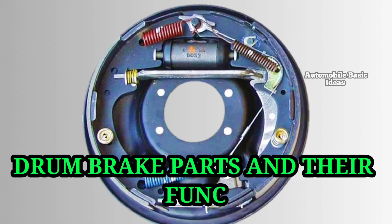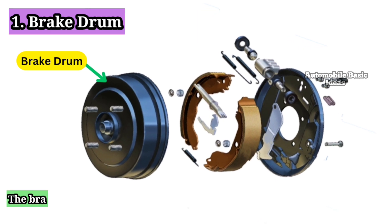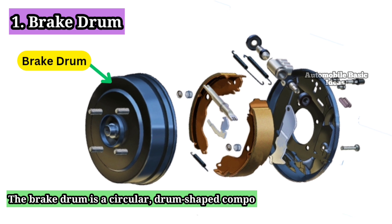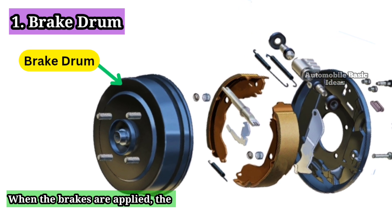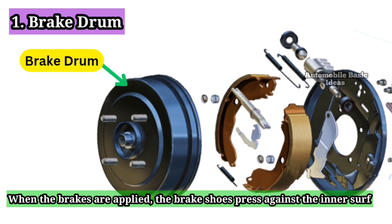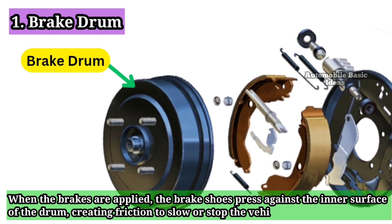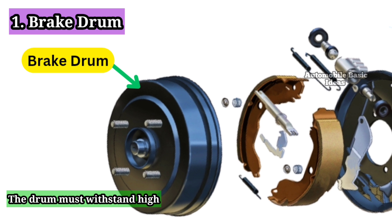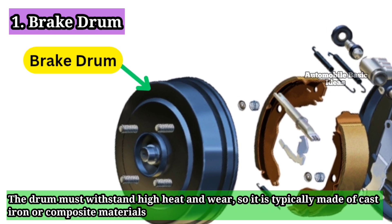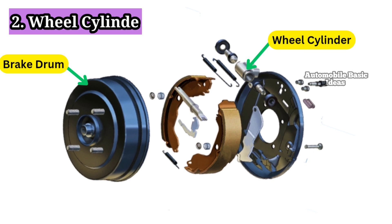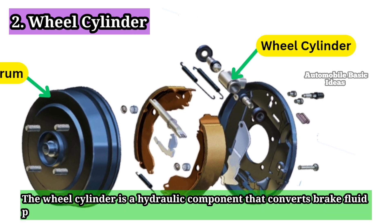1. Brake drum. The brake drum is a circular, drum-shaped component that rotates with the wheel. When the brakes are applied, the brake shoes press against the inner surface of the drum, creating friction to slow or stop the vehicle. The drum must withstand high heat and wear, so it is typically made of cast iron or composite materials.